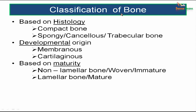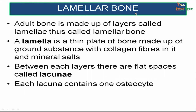Bone can be classified according to histology, development, and maturity. Histologically, bone is classified as compact bone or spongy bone — also called cancellous or trabecular bone. Developmentally, bone is classified as membranous or cartilaginous. Based on maturity, bone is non-lamellar (woven or immature) bone or lamellar (mature) bone. Adult bone is lamellar bone.